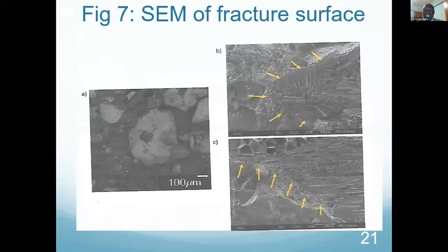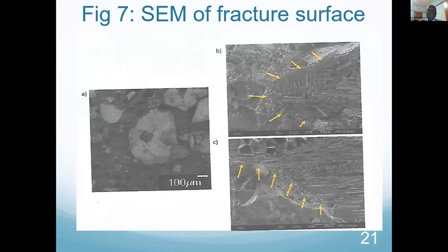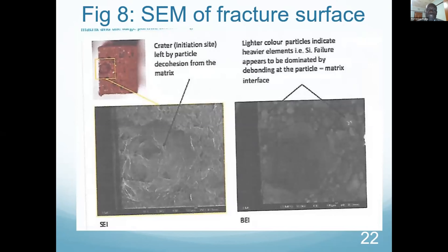The fracture surfaces are also shown. You can see the particles, and most importantly, where the yellow arrows point, those show points of decohesion between the particle and the matrix. In the next slide, you can see a crater caused by decohesion of a particle departing from the matrix, and this acts as a site for crack initiation.